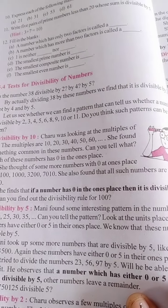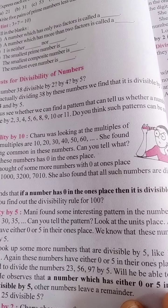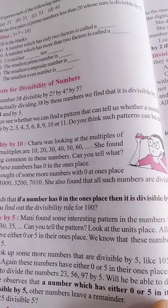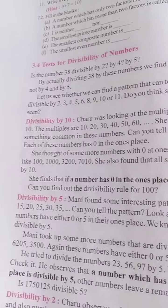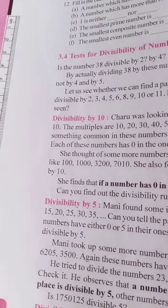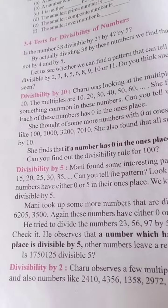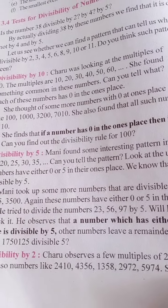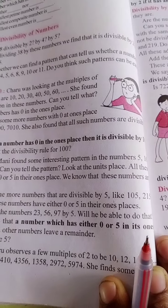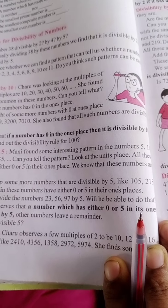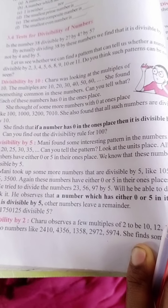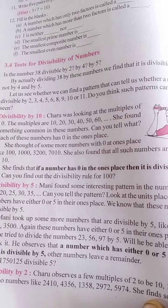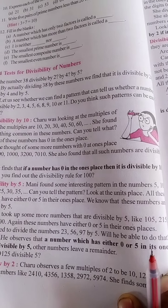She thought of some more numbers with 0 at the ones place, like 100 and 1000. She also found that all such numbers are divisible by 10. So, if a number has 0 in the ones place, then it is divisible by 10.